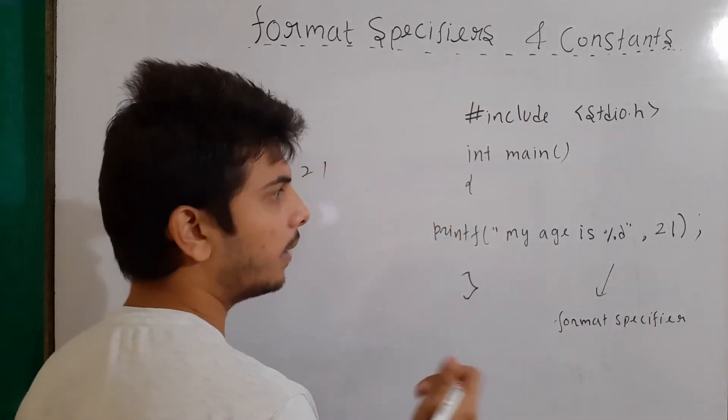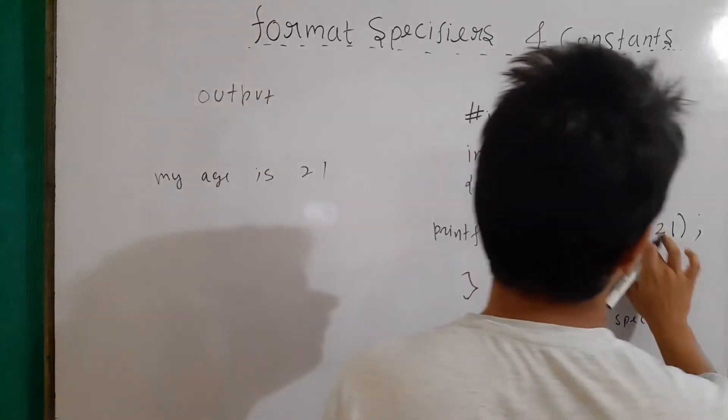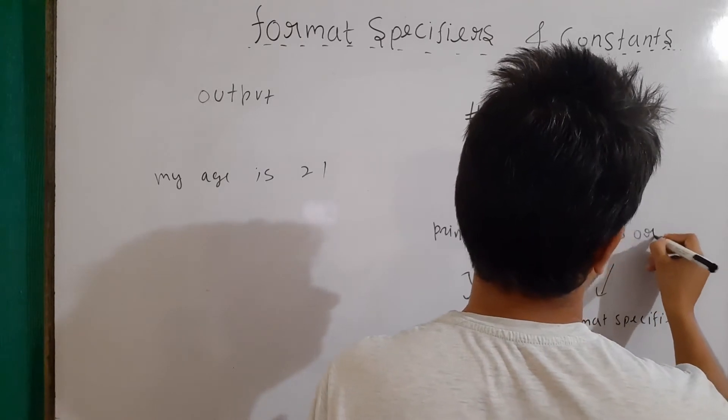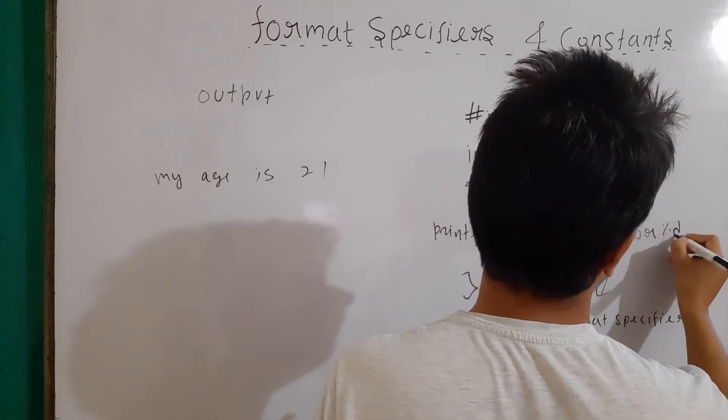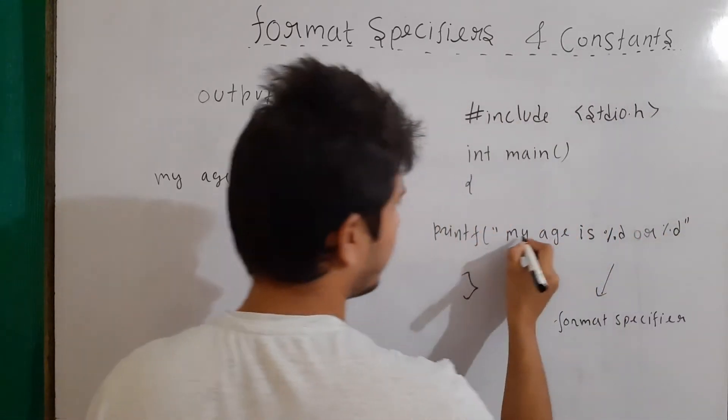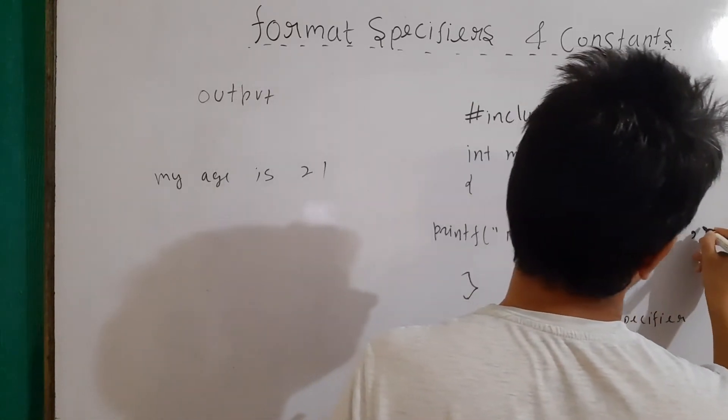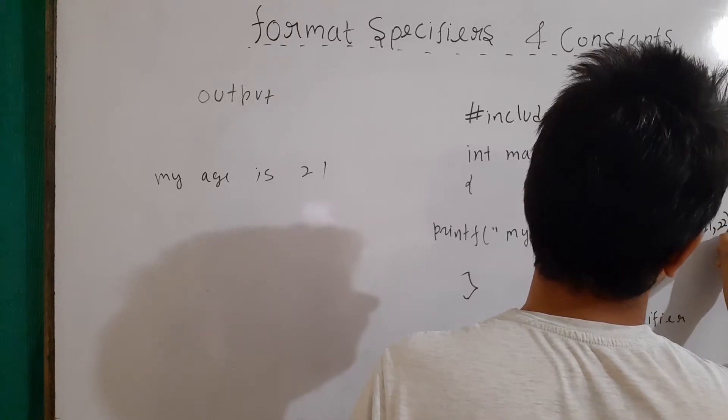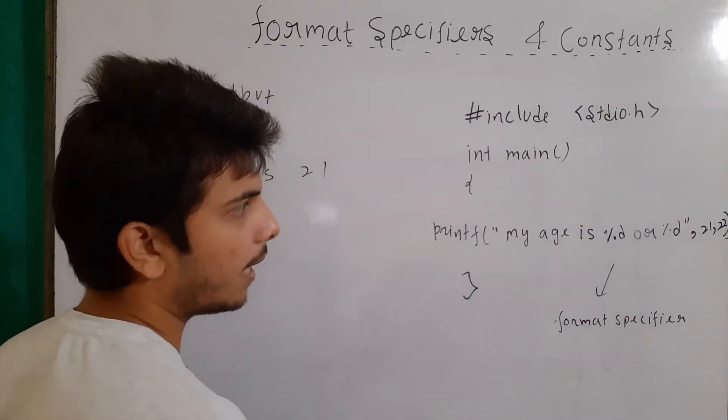We can also use multiple format specifiers. Let's say here, I'll write or %d and then closing of double quotes, then here, let's say 21, comma 22 and then at the end, semicolon with parenthesis end. Now, what will happen?